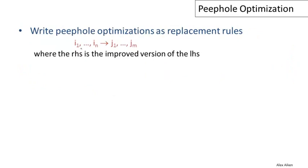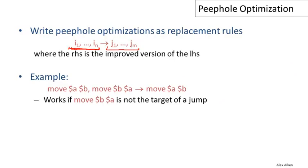Peephole optimizations are generally written as replacement rules: we have the window of instructions on the left and a preferred sequence on the right. If we see the instruction sequence on the left, we replace it by the one on the right. For example, if we have a move from register B to register A and then a move back from register A to register B, the second move is useless and can be deleted — replacing this two-instruction sequence by a one-instruction sequence — provided there's no possible jump target at that instruction.